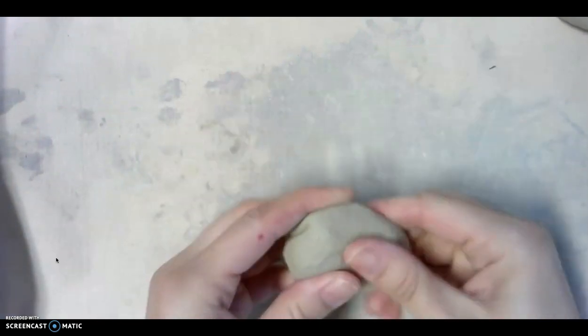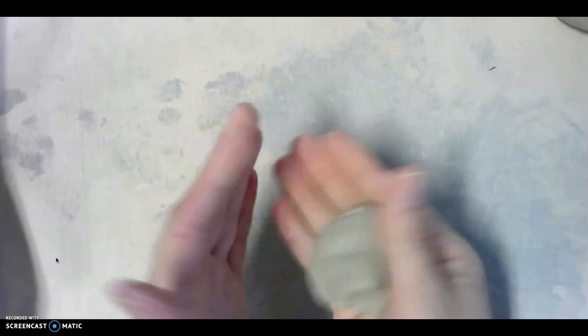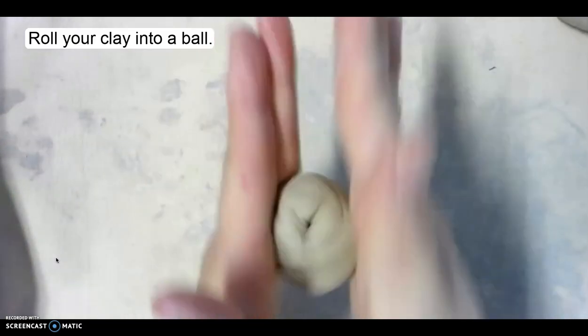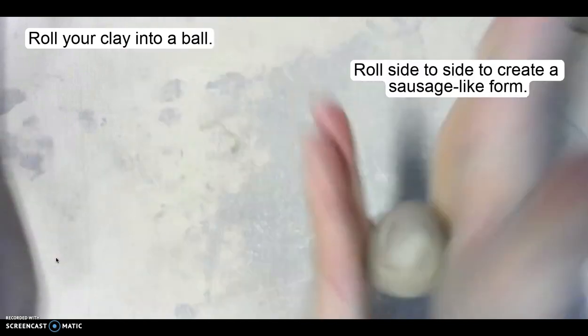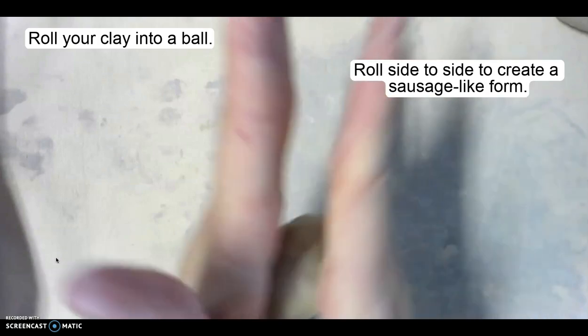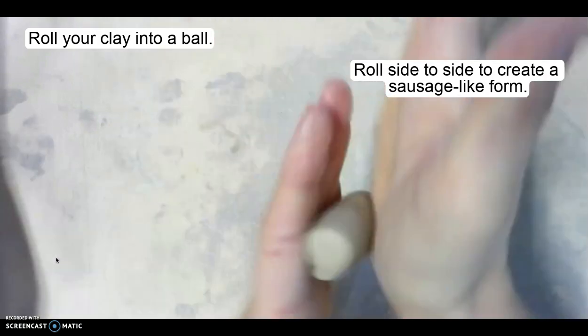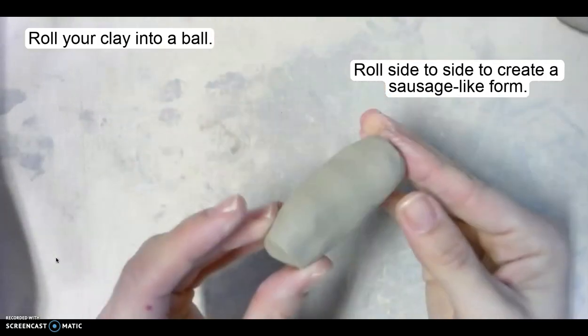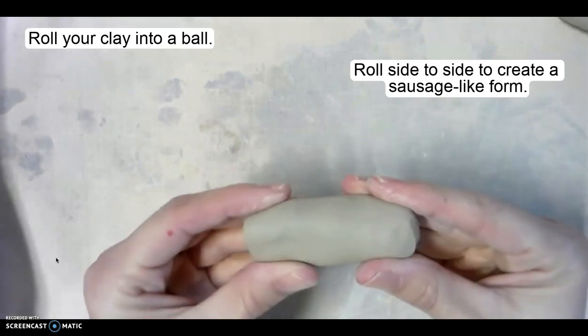What we're going to do to start our coil is actually roll your clay into a ball using your hands, and then roll side to side, use gentle pressure, and you should be able to get this dog poo sausage shape. It's the best way to start.